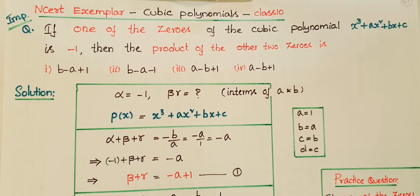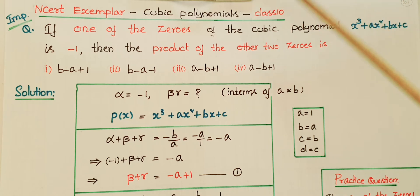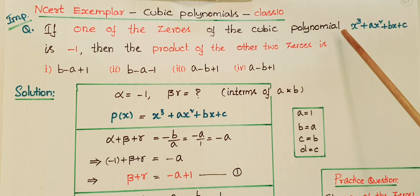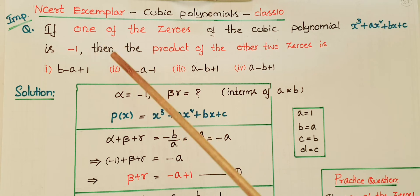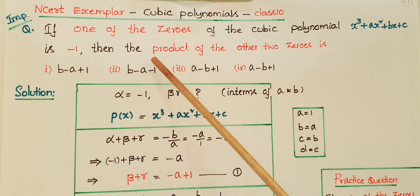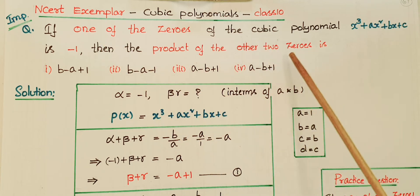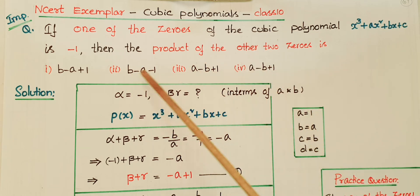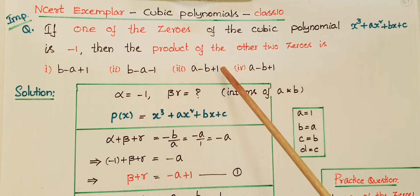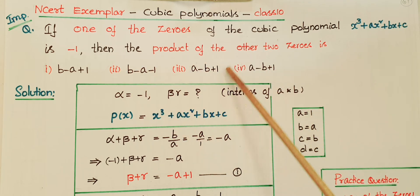Hello everyone. Today I am going to tell the solution of this problem: if one of the zeros of the cubic polynomial x³ + ax² + bx + c is minus 1, then the product of the other two zeros is — and there are four options given, we have to find which is the correct answer.